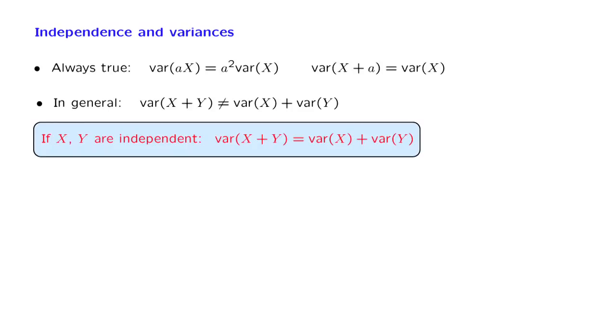Let us go through the derivation of this property. But to keep things simple, let us assume, just for the sake of the derivation, that the two random variables have zero mean. So in that case, the variance of the sum is just the expected value of the square of the sum. And we can expand the quadratic and write this as expectation of X squared plus 2XY plus Y squared.